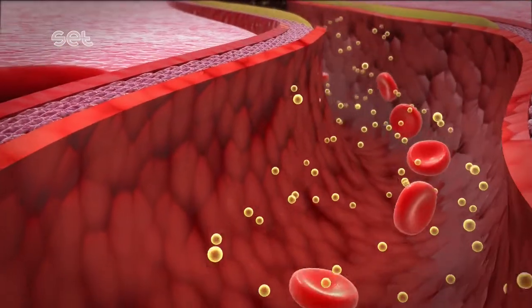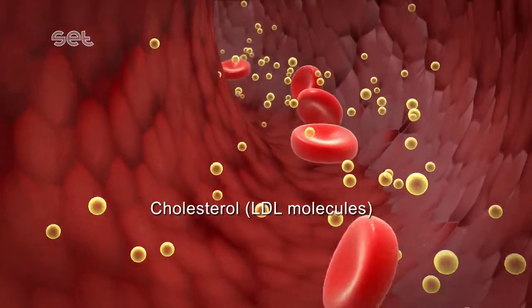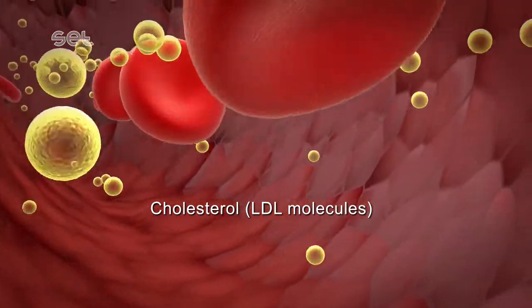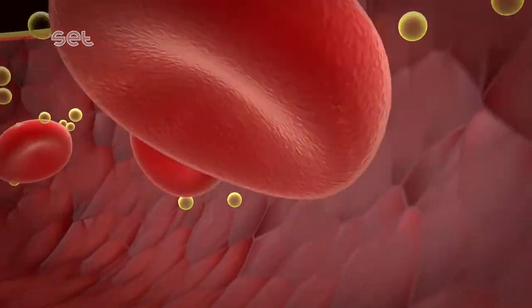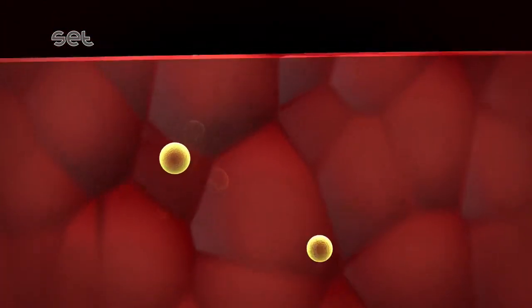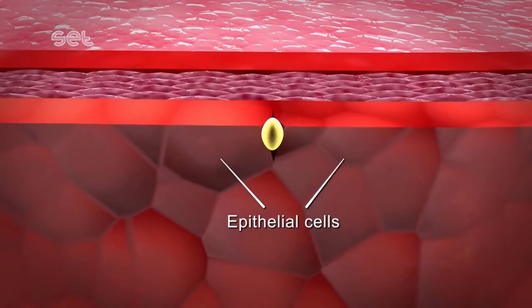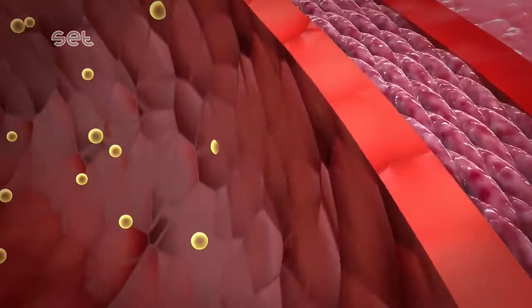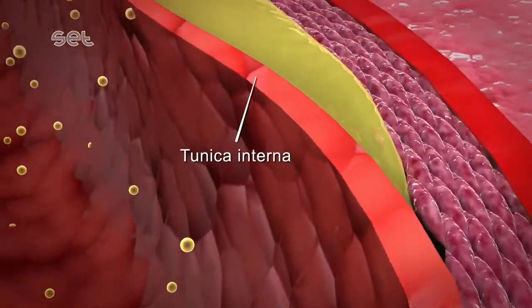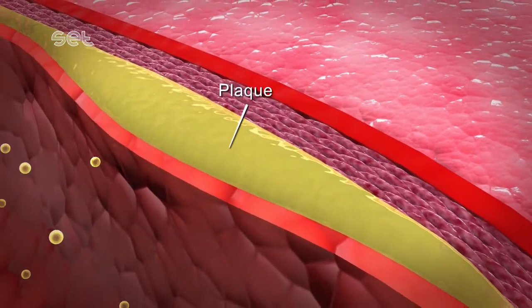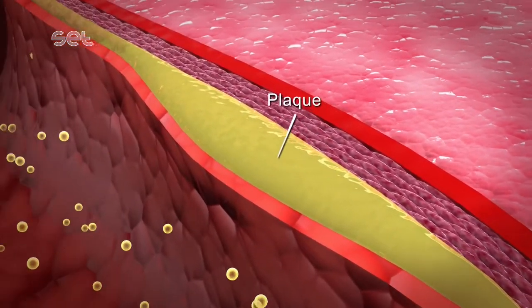When cholesterol, found as LDL molecule in the blood, is carried at high levels for a long time, these cholesterol molecules precipitate on the artery's surface. Then it leaks through the gaps of the epithelial cells. They form a deposit in between the tunica interna and the tunica muscularis layers. This fatty deposit is called plaque.